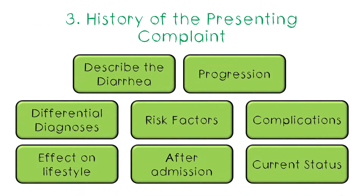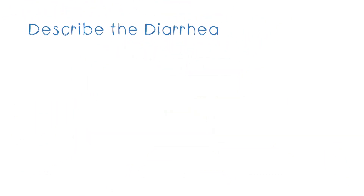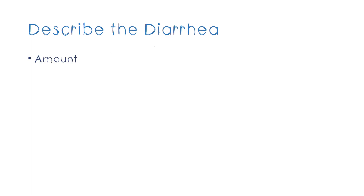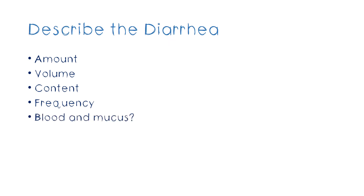The history of presenting complaint has several components. We first have to describe the diarrhea. There are a lot of things you can describe about the diarrhea that will help you diagnose how it was caused. From the mother, you ask about the amount of diarrhea — was it only a little or was it profuse? How much was the volume approximately? What was the content — did it have undigested food particles? How frequently did the child get it, meaning per day, how many episodes? Then ask if there was any mucus or blood mixed with the stools.